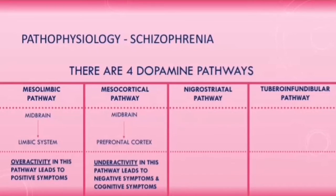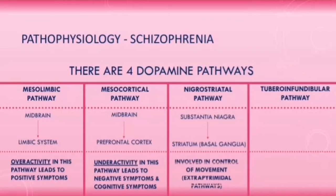The nigrostriatal pathway goes from the substantia nigra to the striatum, which is part of the basal ganglia. This pathway is responsible for the control of movement through the extrapyramidal pathways, which are mediated by the basal ganglia.